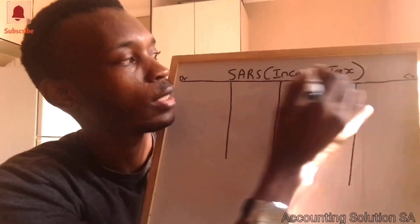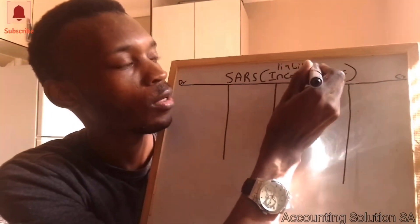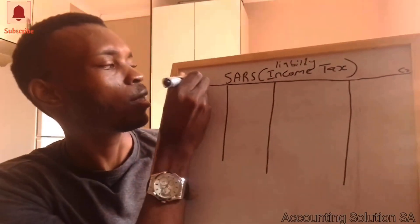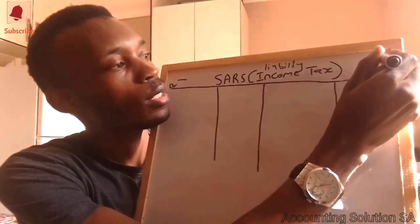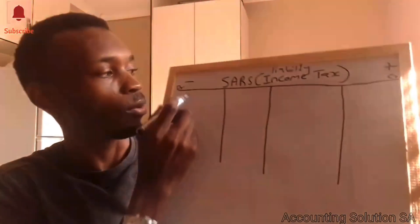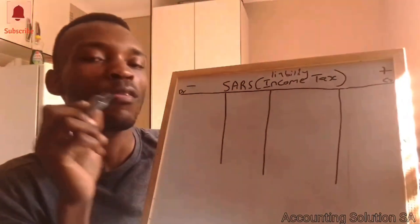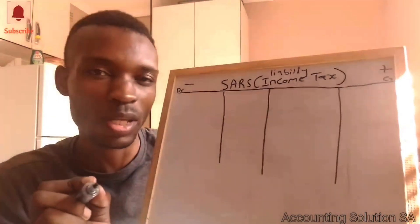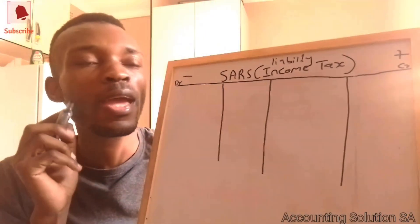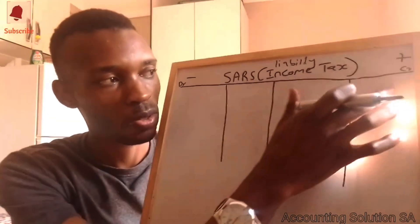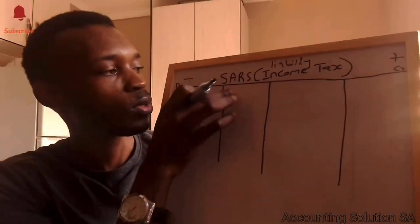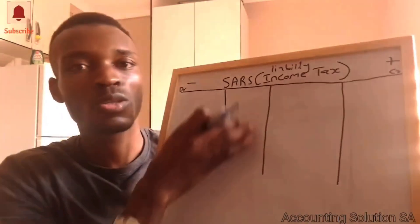The SARS income tax T-account is a liability account. On the debit side it decreases; on the credit side it increases. Whenever we reduce our debt to SARS we debit the account, but if the liability goes up or we owe SARS more, we record it on the credit side. Any opening balance given at the beginning of the year goes on the credit side; any payment made to SARS goes on the debit side.